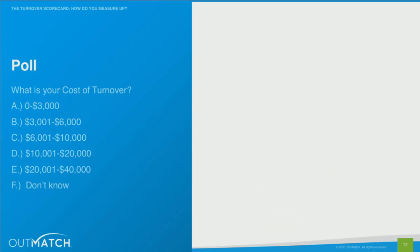Let's do a poll. For jobs that you have high volume in your organization, try to find or imagine one job that's high volume where you do have a lot of turnover. Estimate what you believe the cost of losing one person is. Is it A, $0 to $3,000? Is it B, a little over $3,000 to $6,000? Is it C, $6,000 to $10,000? D, $10,001 to $20,000? E, $20,001 to $40,000? Or F, you don't know? Pick one choice based on your closest estimation.